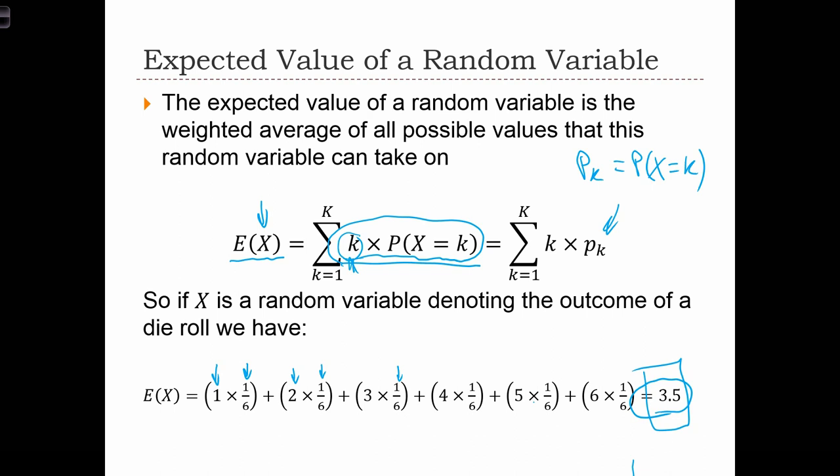So the expected value is often interchanged with the average or the mean of a random variable. So the mean value of a random variable is the same thing as the expected value of the random variable.